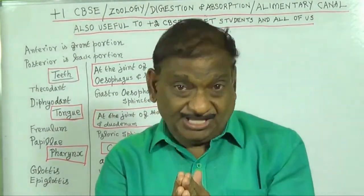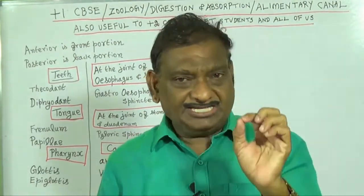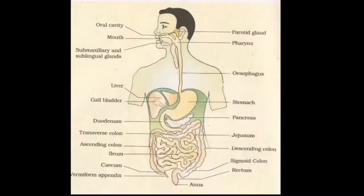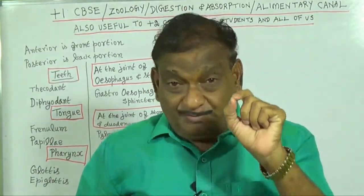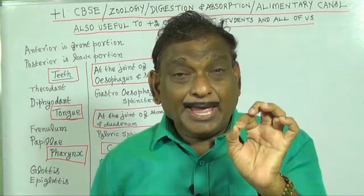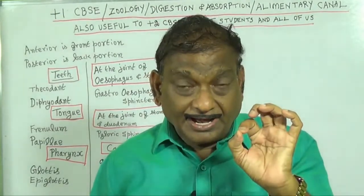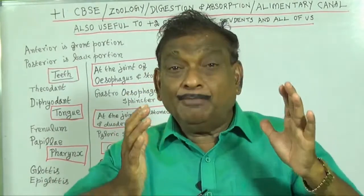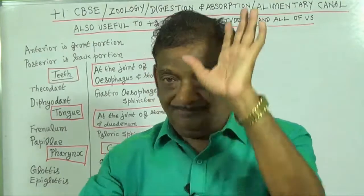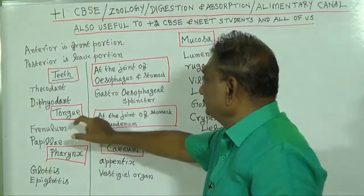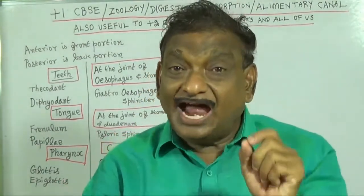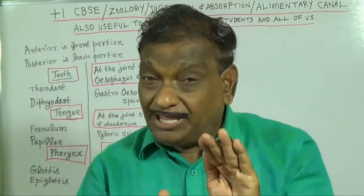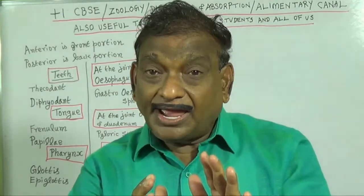In the buccal cavity there are two organs: tongue and teeth. In respect of the tongue, we have to know two things. One: the tongue is a flexible muscular organ and is attached to the floor of the buccal cavity by the frenulum. Two: on the upper surface of the tongue there are small projections called papillae, and some of these papillae have taste buds.